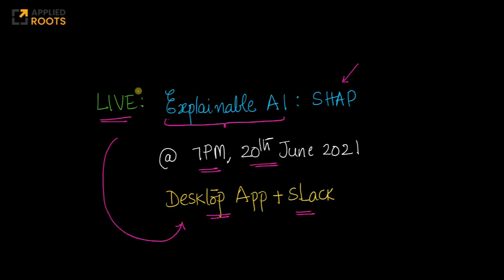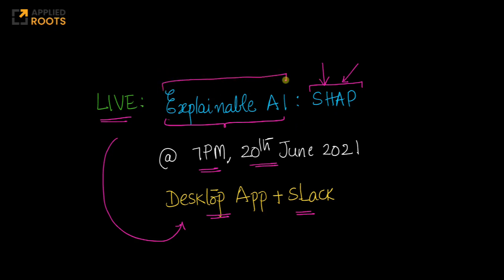I am looking forward to this session because Shapley values is a concept that I studied at the graduate level in game theory, and this is one place in AI and machine learning where concepts from game theory are applied very actively. Explainable AI itself is a very important concept in modern machine learning as machine learning, state-of-the-art AI, and deep learning techniques